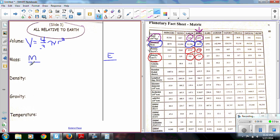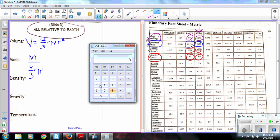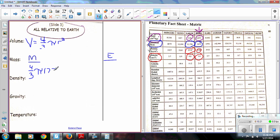So, I need to do my calculation. 4 over 3 pi radius. Now, to find the radius from the diameter, what do I have to do? I have to take the diameter, 3475, and divide it by 2 to get the radius. So, my radius of the moon is 1737.5.